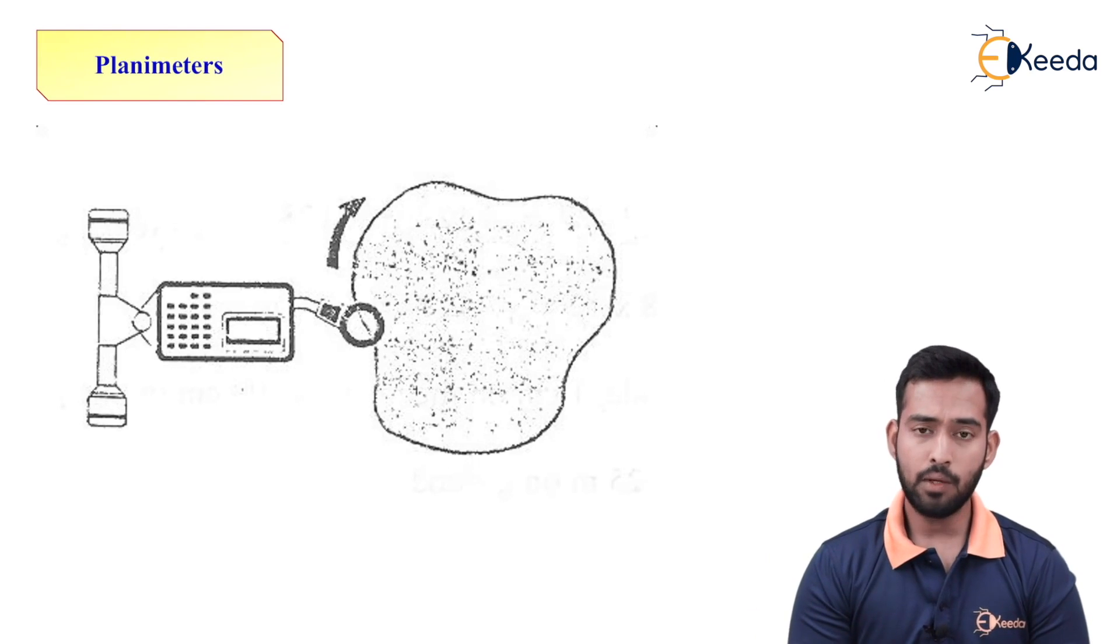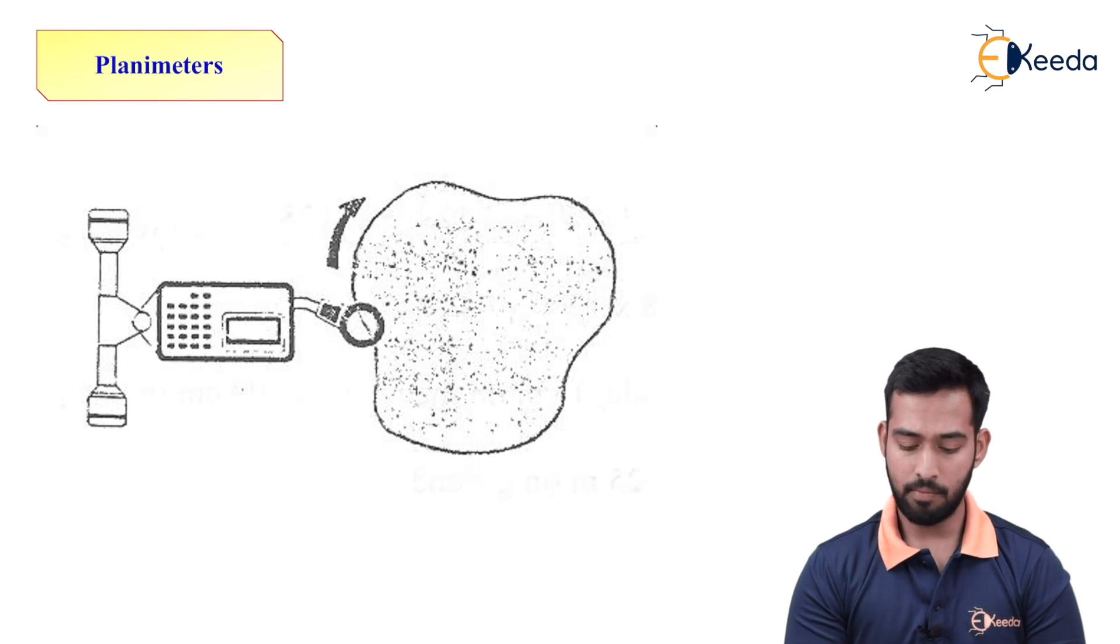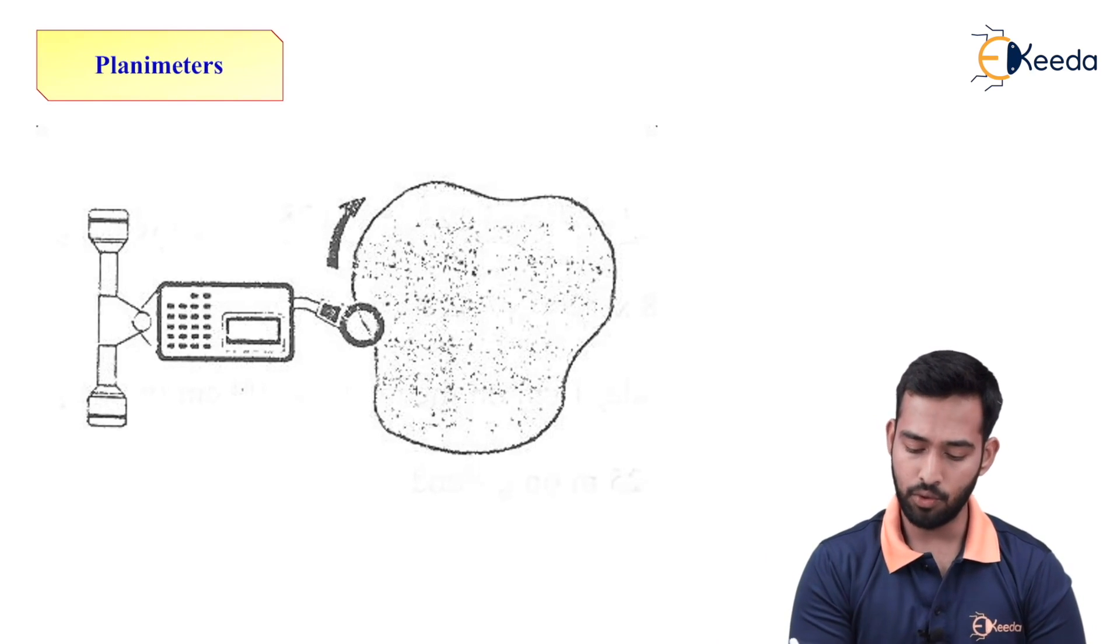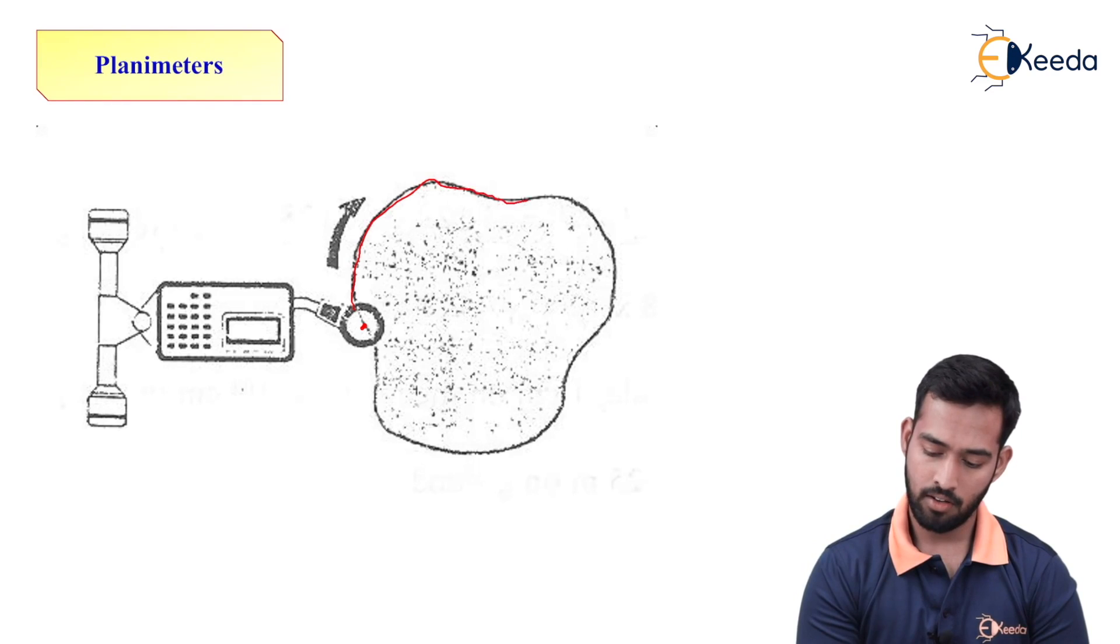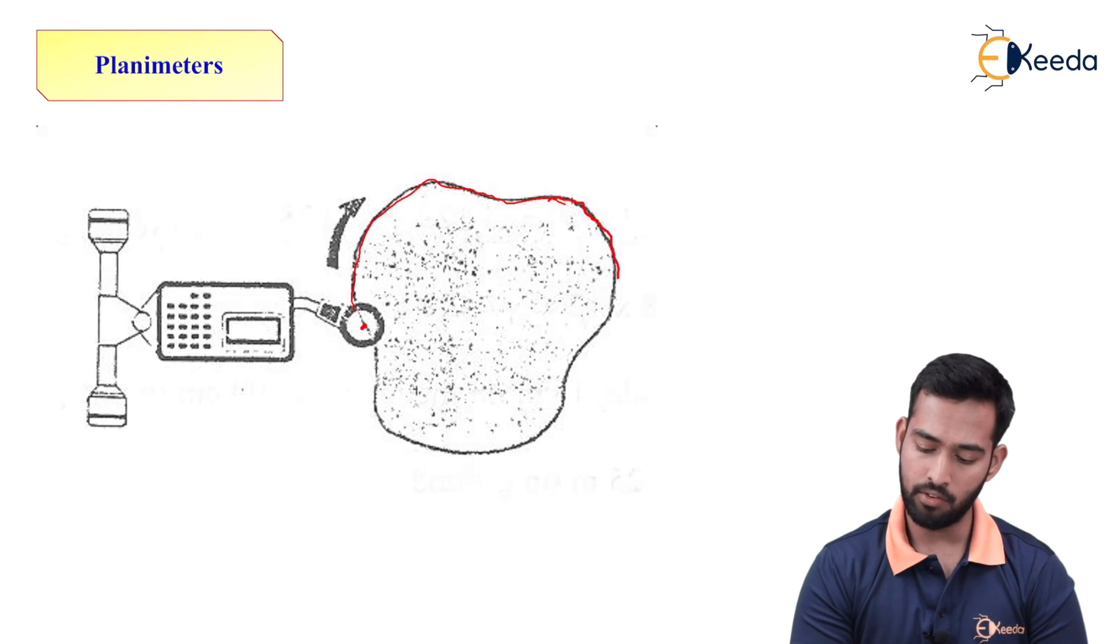So to calculate the area of this figure by using digital planimeter, what we have to do? The tracing point, we have to rotate this tracing point along your boundary. The accuracy we have to maintain while tracing the boundaries. More accurate you will trace, you will get more accurate readings.